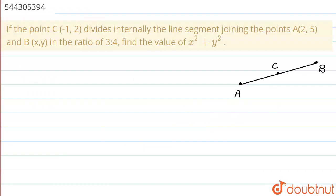Hello students, welcome to Doubtnet. Let's see this question. If the point C(-1, 2) divides internally the line segment joining the points A and B in the ratio of 3 is to 4, find the value of x² + y².